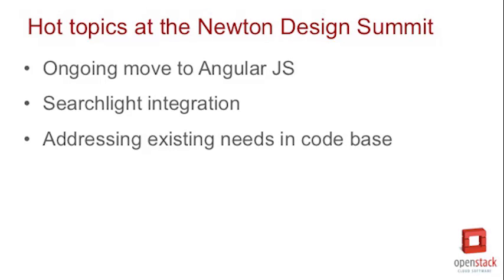We're about a month after the Austin Design Summit. What were some of the hot topics that you and your team discussed and what were the outcomes? With Horizon, we've got an ongoing move to AngularJS and moving onto a JavaScript client-side framework. This has always been quite contentious because it's basically resulted in quite a big rewrite of the project. We tend to get a lot of back and forth over how we'll solve those issues going forth, and how much time we want to put into the long-term goals around Angular and things like Searchlight integration versus fixing the problems we have here and now with the existing Python and Django implementation.